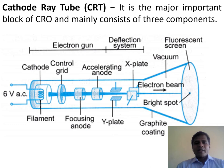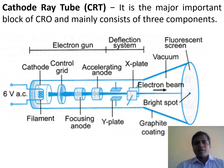At the left end of the CRT, there is an electron gun, which consists of the cathode, the filament, control grid, focusing anode, and the accelerating anode. At the right end of the CRT, there is a fluorescent screen, which is usually coated with phosphor or zinc sulfide. In the middle, between the two ends, there is a deflection system, which consists of vertical and horizontal plates. We shall discuss in detail the function of each component.